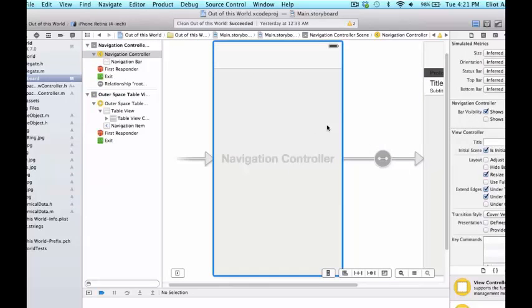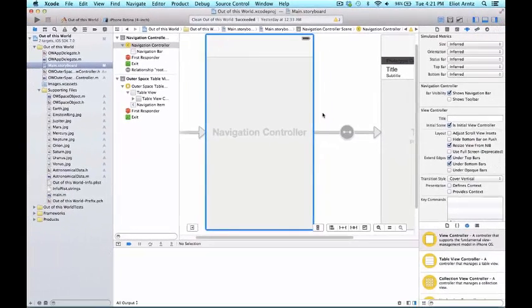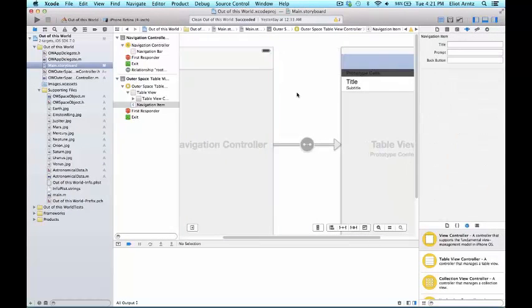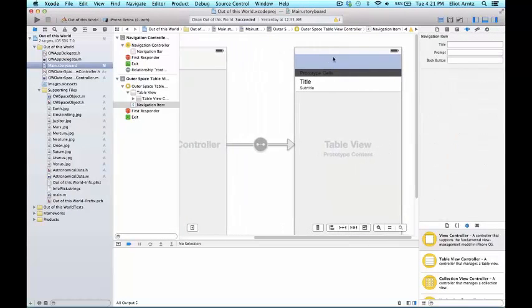So what this is going to do is it's going to add a navigation stack. And we can go ahead and we can now select on our table view controller this top bar that gets added for us. And you've probably seen this before in applications where you've been able to navigate to new pages or go back to an old page from the navigation bar.